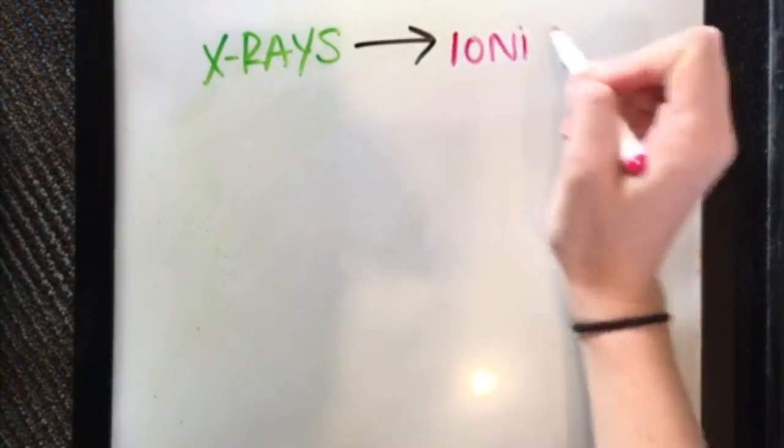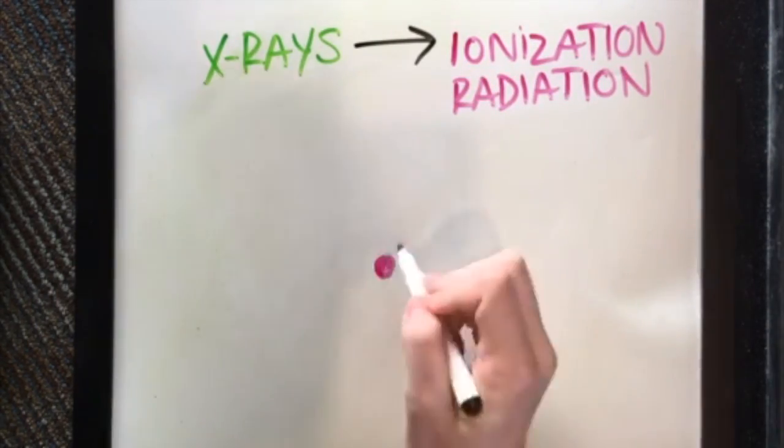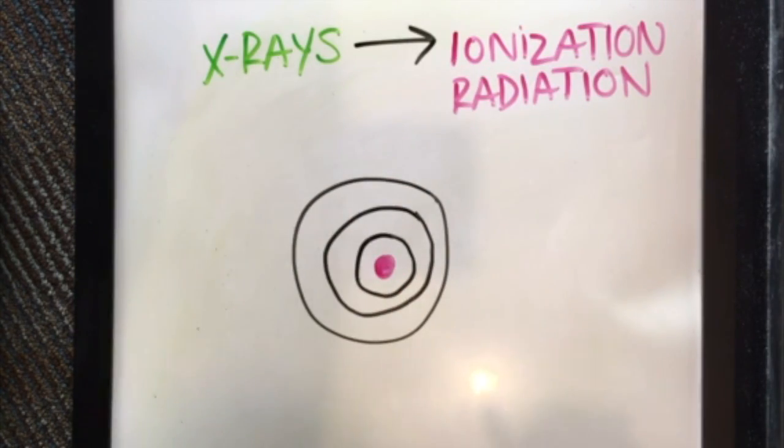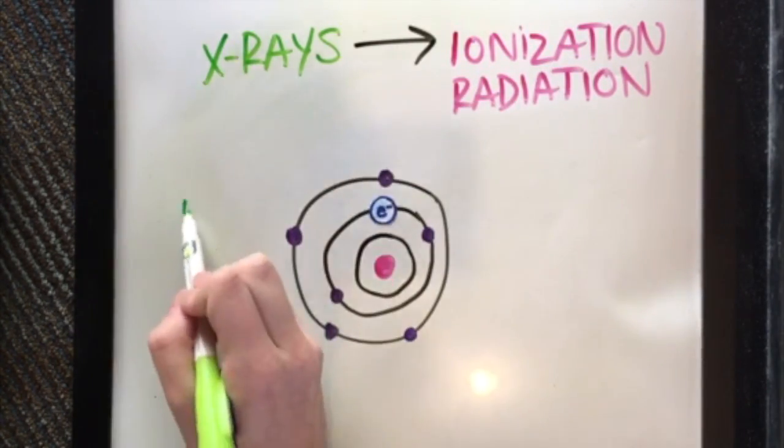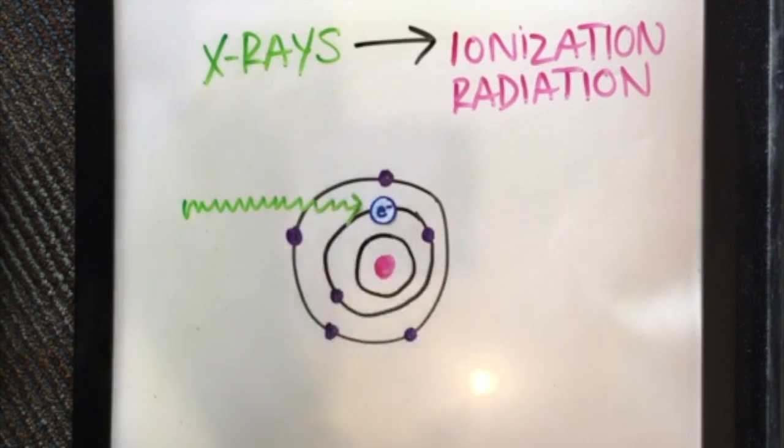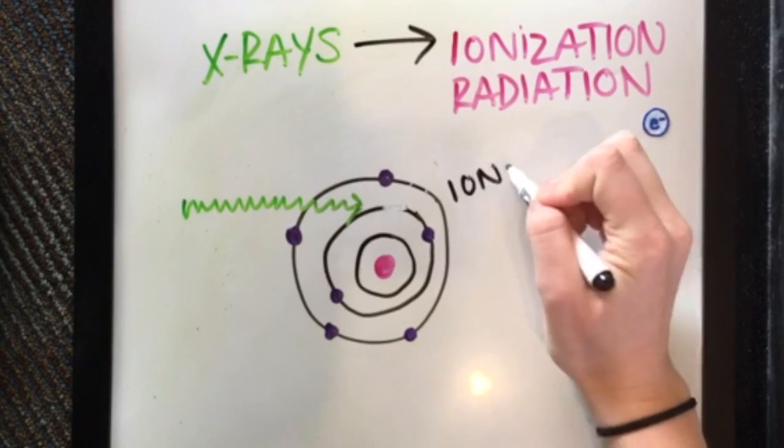X-rays cause ionization radiation. Ionization radiation is defined as radiation with enough energy so that during an interaction with an atom, it can remove tightly bound electrons from the orbit of an atom, causing the atom to become charged or ionized.